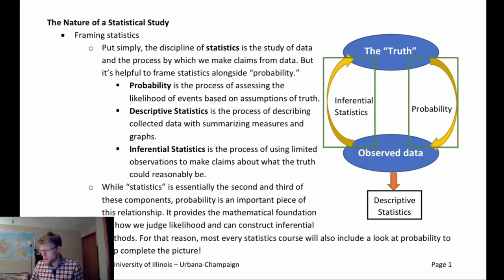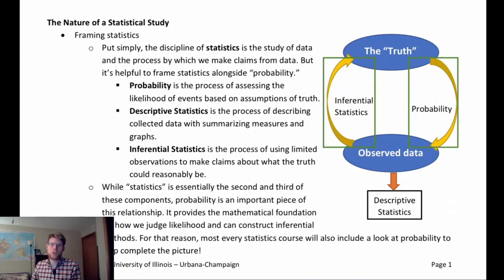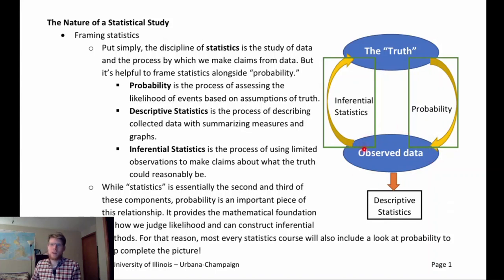Think of probability here as starting from information that we know — in other words, we understand the full process, we understand what the population is, we understand the likelihood model undergirding this process, and we're trying to draw information about what could reasonably happen. When we do that, we're basically gathering observed data. There exists some underlying distribution, and then we gather some data, and then we have our observed data.